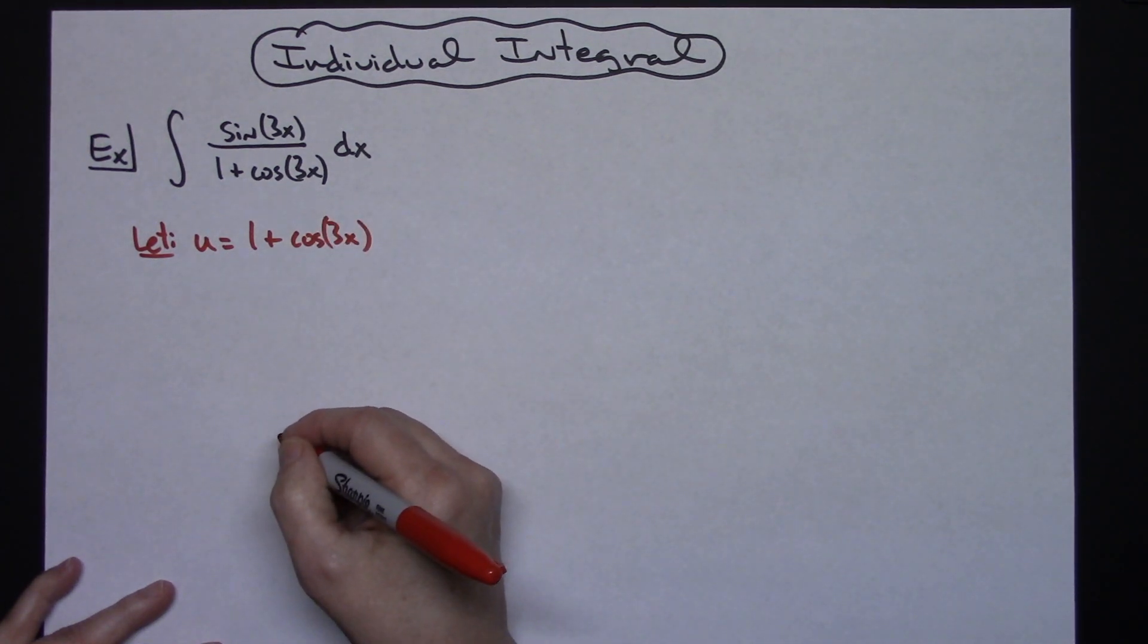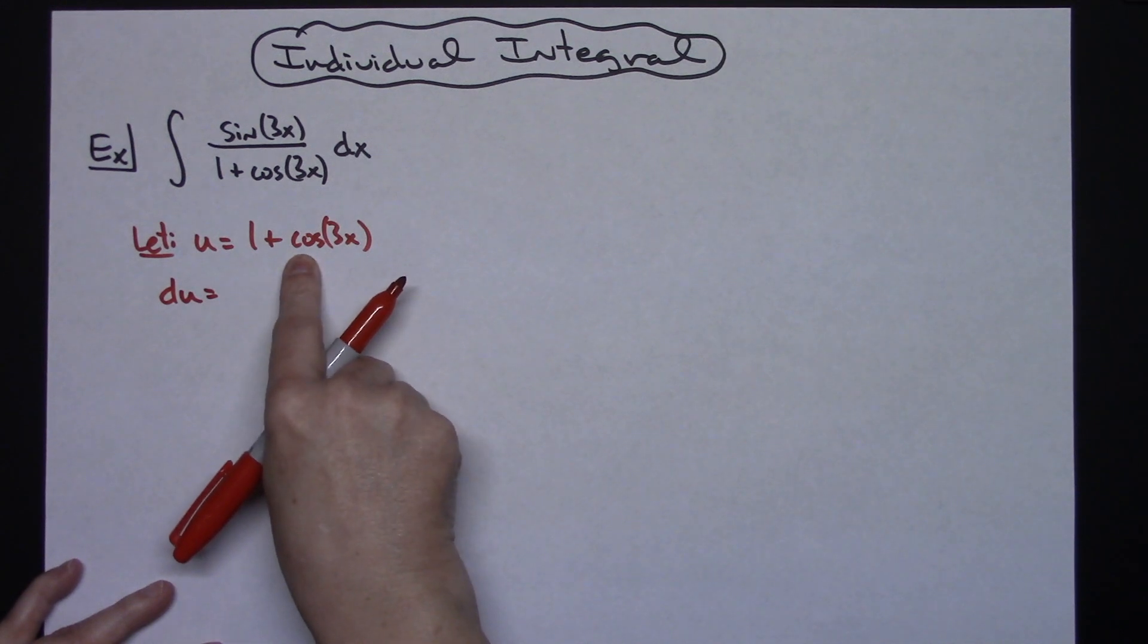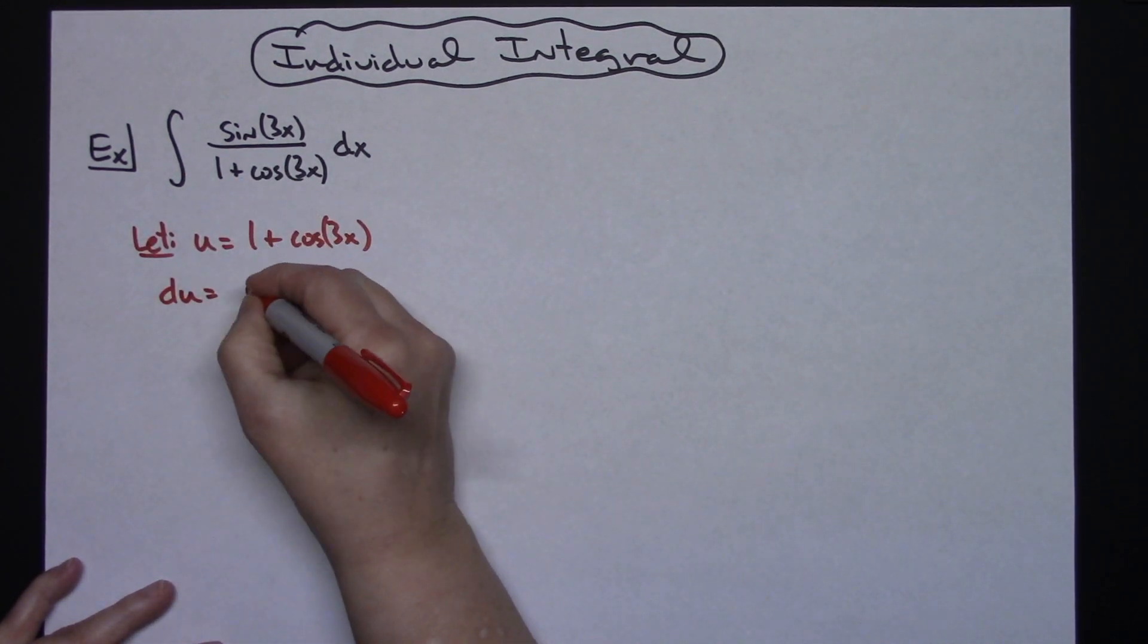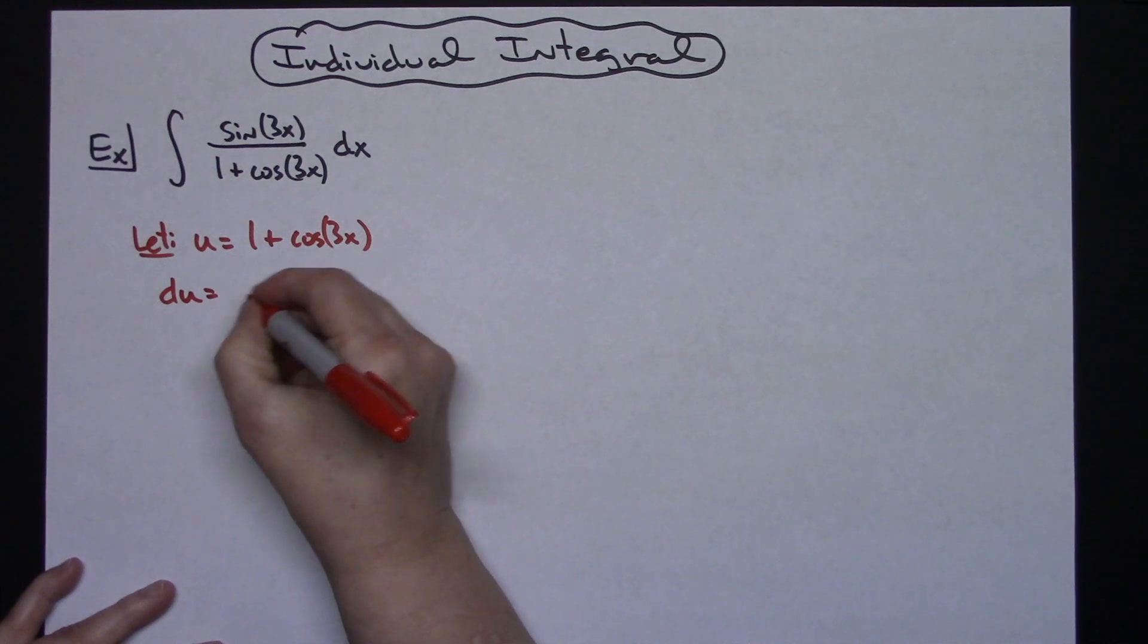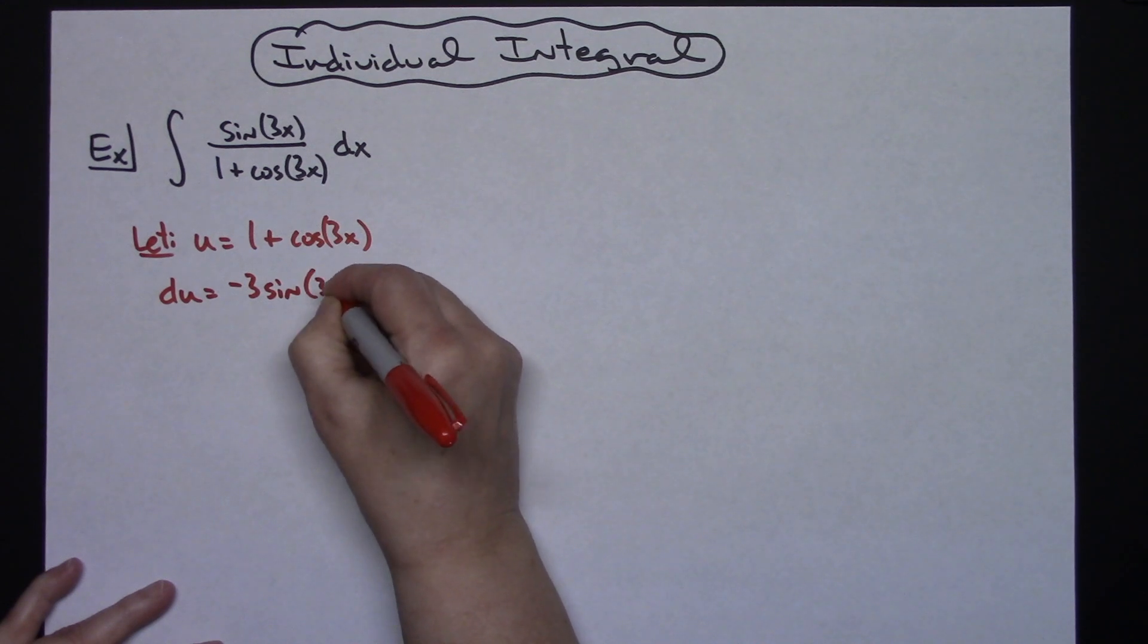I'm going to go ahead and take the derivative of both sides. So du is equal to, derivative of 1 is going to fall out, derivative of cosine there will be minus sine and then times the chain on the inside there. I'll need a 3, so I'll need a negative 3 sine of 3x dx.